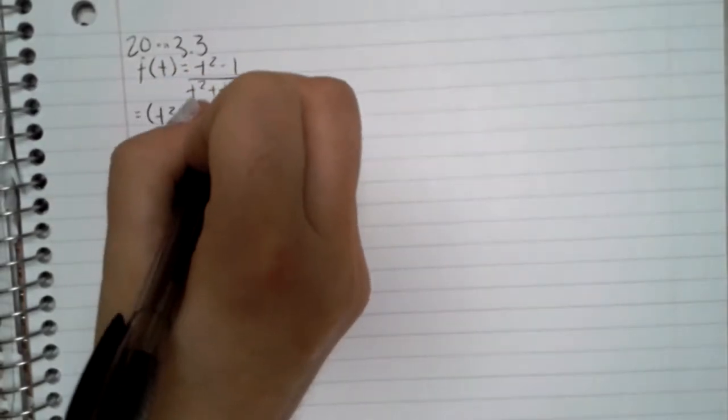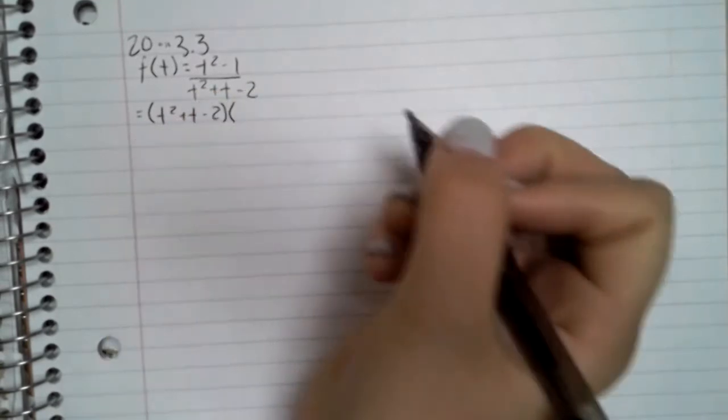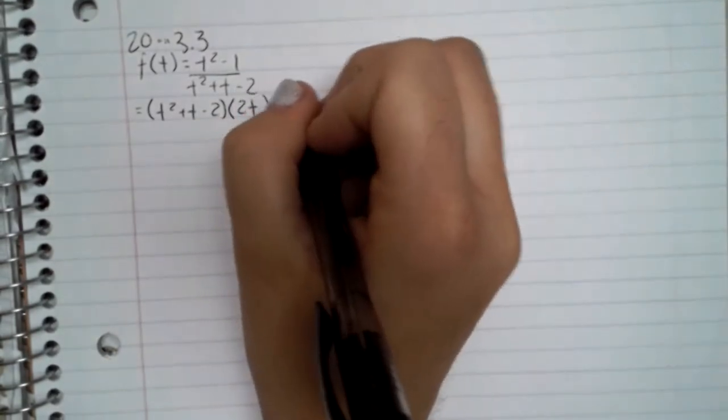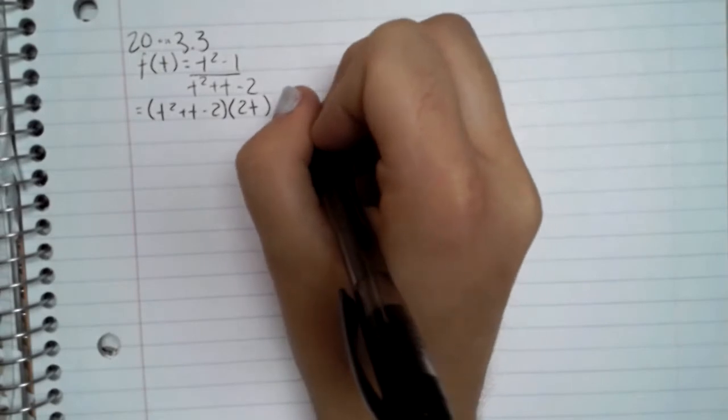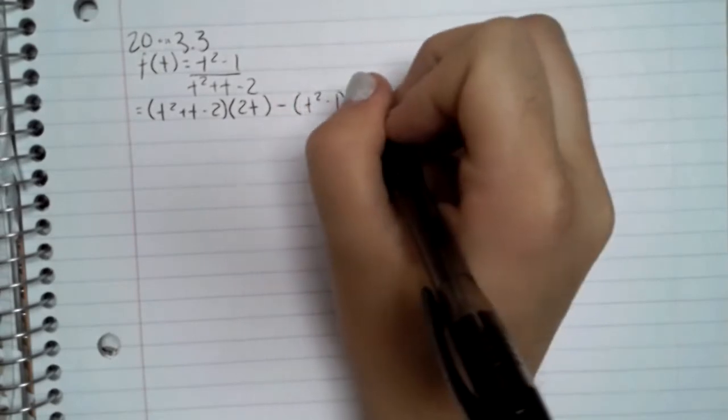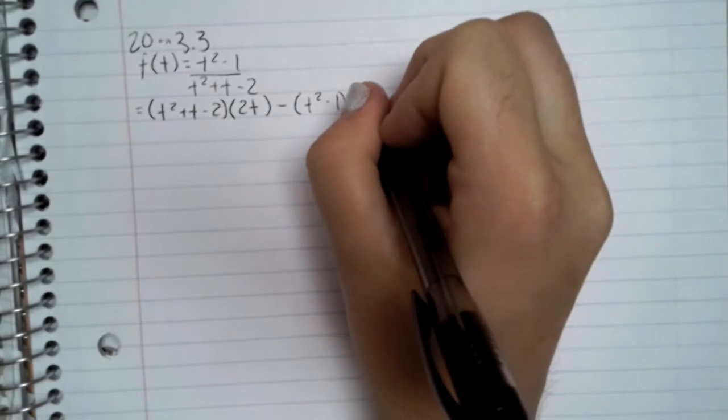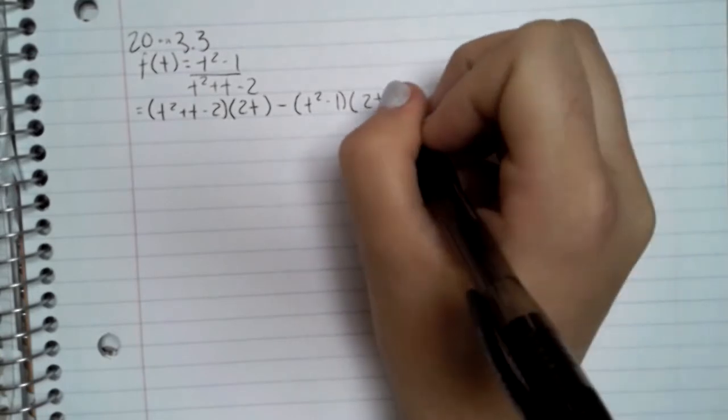We take g of x times the derivative of f of x, which is 2t, and then subtract that from f of x times the derivative of g of x.